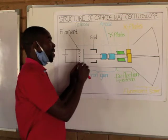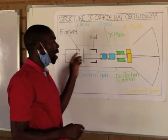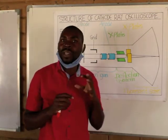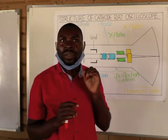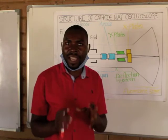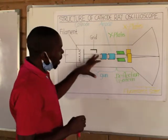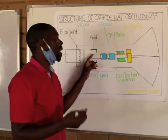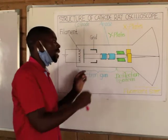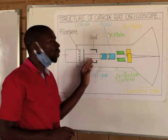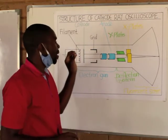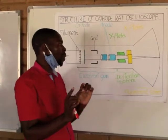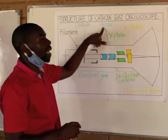Apart from that, when the electrons are emitted, they are going to pass through a grid. Just like one of the parts of the human eye controls the amount of light entering the eye, the grid also performs the same function but in a different way — the grid is responsible for controlling the amount of electrons passing through it. As the electrons continue passing, they will reach the part which is called the anode.